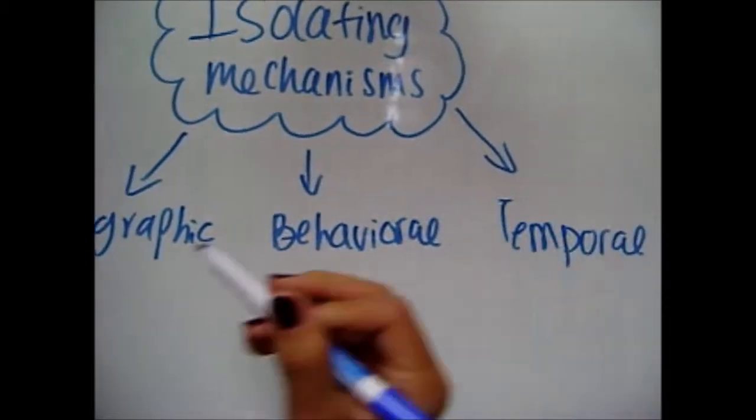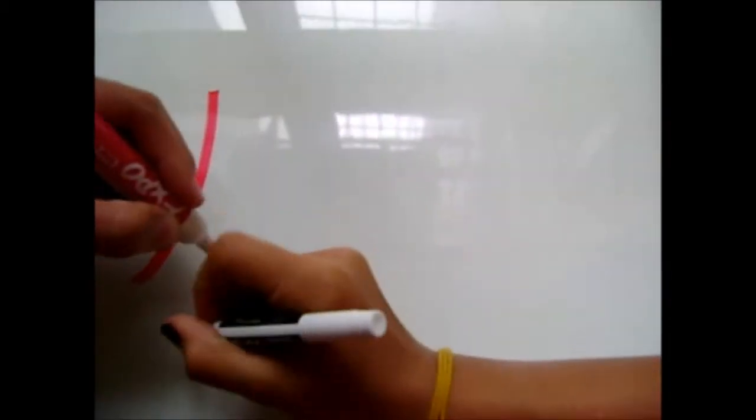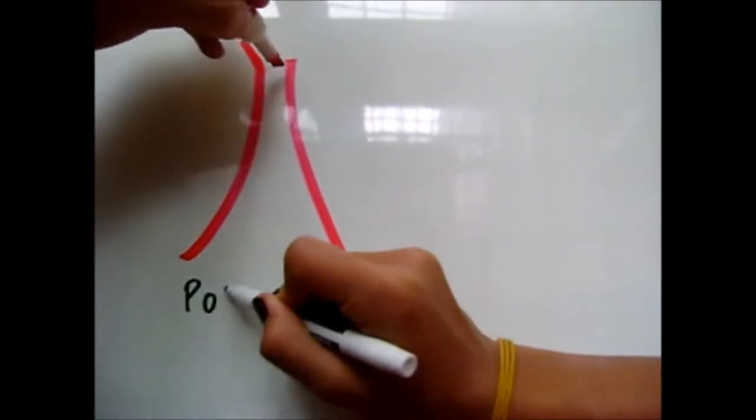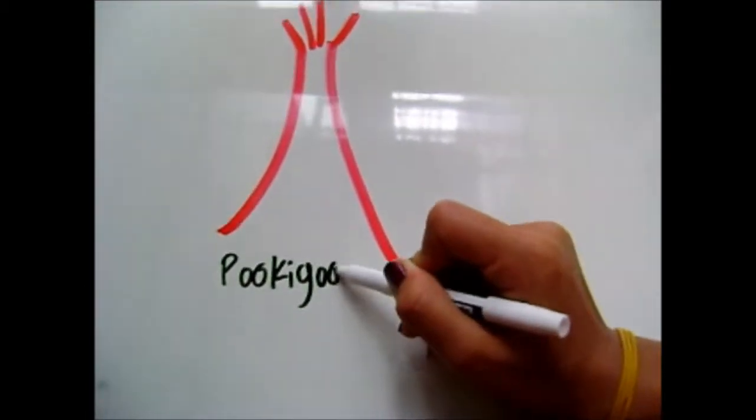We're first going to see geographic. It's really simple. Geographical isolation is when populations are separated by geographic barriers, such as mountains, rivers, and other bodies of water.